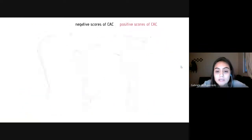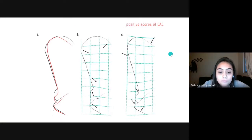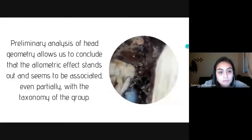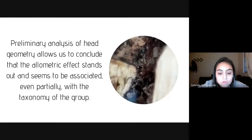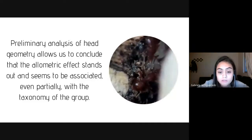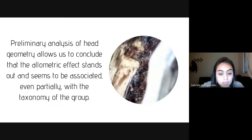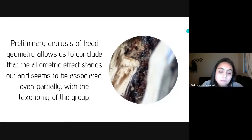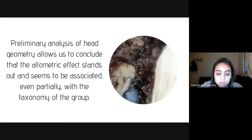Here we can see a comparison between the two allometric effects found — the negative and the positive scores. The preliminary analysis of head geometry allows us to conclude that the allometric effect stands out and seems to be associated, at least partially, with the taxonomy of the group. We expect to incorporate semi-landmarks in more species and specimens in future analysis.